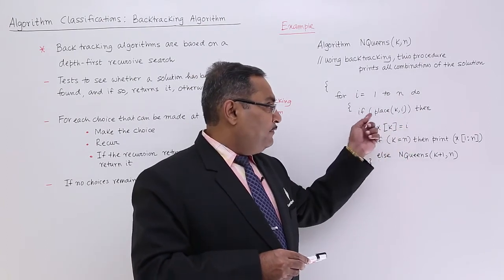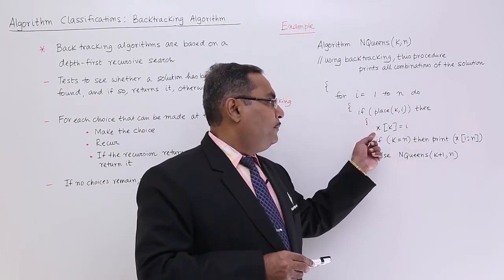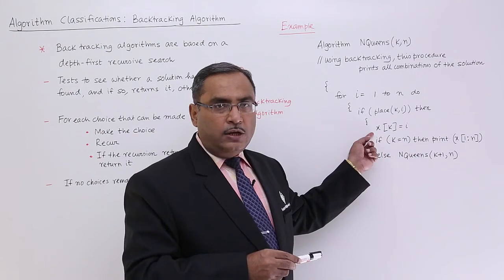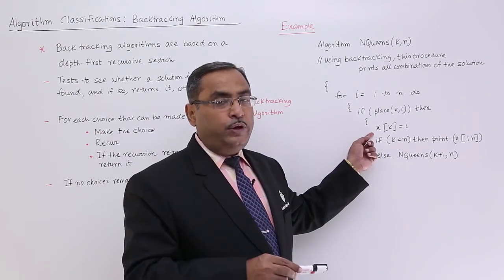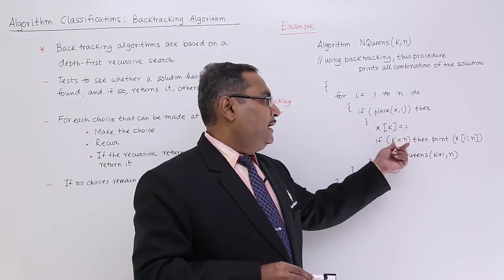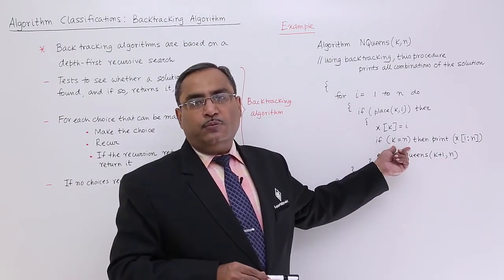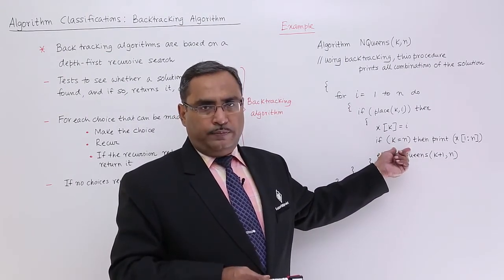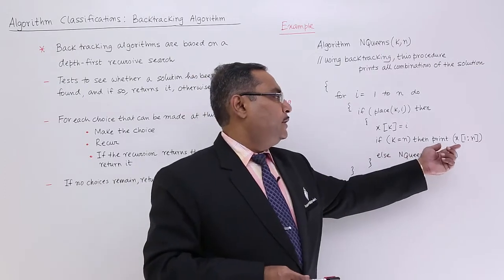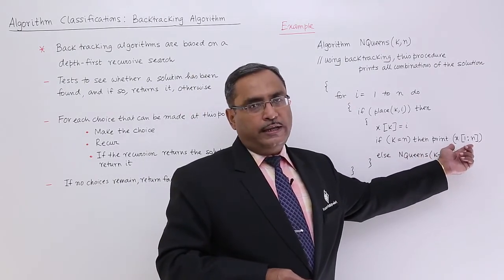If it returns true, then I will be keeping this particular array to indicate that the kth Queen has been placed at the ith column. And if k is equal to n, that means I am placing the last Queen in my problem, then I shall print the solution which is already in the array x.